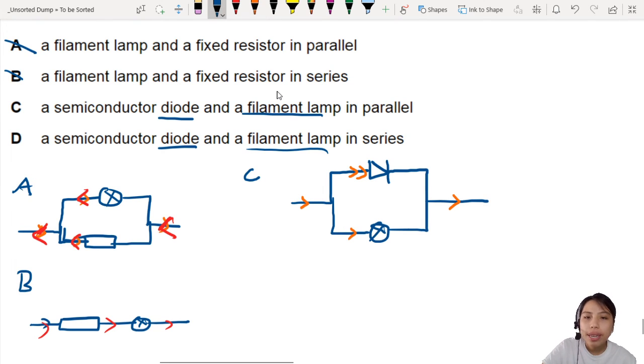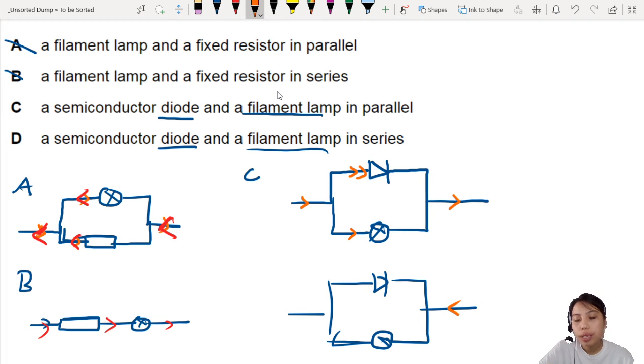But what if we have a current flowing in the opposite direction? How would it look like? So if we have something like this, now we send current this way. Current will not flow through the diode. So all the current will just go through here and go out.